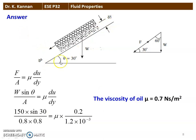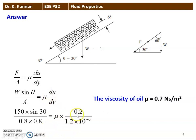This is the arrangement: an inclined plane where dy is the thickness, angle is theta, W is the weight acting downward, and this is the velocity. Using F/A = μ × (du/dy), where F = W sin θ, we get W sin θ / A = μ × (du/dy). Substituting W = 150 N, sin 30°, area = 0.8 × 0.8, du = 0.2 m/s, and dy = 1.2 mm = 1.2 × 10⁻³ m, rearranging gives μ = 0.7 Newton-second per meter square.